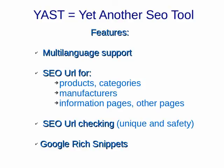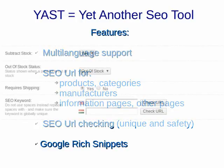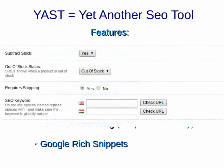It supports multi-languages. You can set a SEO URL name in every language that you set in the admin page. Yast uses Google rich snippets to provide more information on Google search pages. The admin page has a new feature — it is the SEO URL checking. You can set a unique URL without duplication or invalid URL.